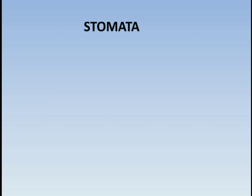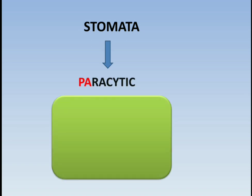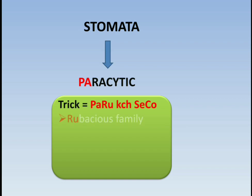Next we are talking about stomata. There are four types of stomata. The first one is paracytic. The trick to learn paracytic stomata is 'Paru kuch sikho.' PA denotes paracytic, RU denotes rubiaceous family — those drugs which belong to the rubiaceous family show paracytic stomata. SE denotes senna and CO denotes coca.